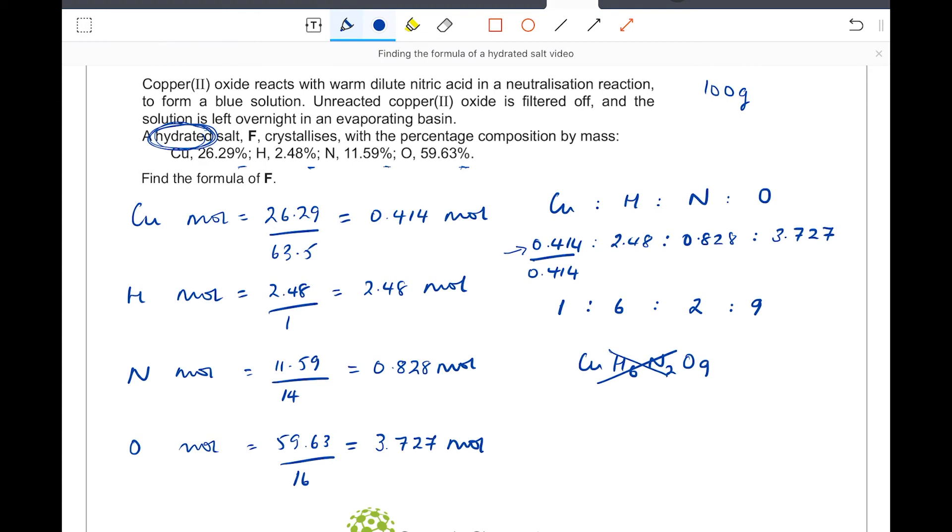I know that it's a hydrated salt, it told me that up here in the question, which means that some of that hydrogen and oxygen must be water. Water has the formula H2O. I have got six hydrogens in this particular salt, which would give me three water molecules. So I can see straight away that it's going to be ·3H2O. Three water molecules uses up three of my nine oxygens.